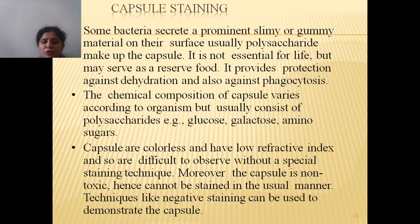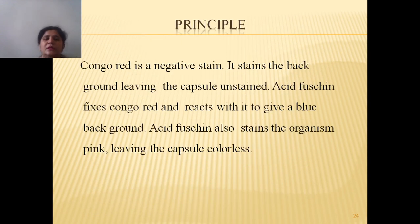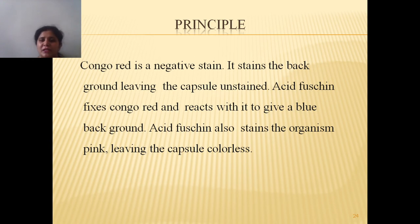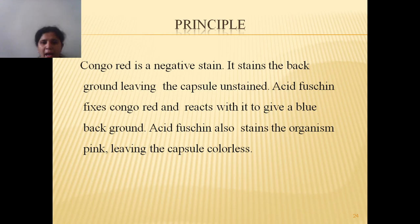In addition, capsules are non-ionic and therefore cannot be stained in the usual manner. We can also make use of negative staining to demonstrate the capsule. The principle of capsule staining: we make use of Congo Red, which is an acidic stain used in the negative staining technique — it stains the background leaving the capsule unstained. Then we use Acid Fuchsin, which fixes Congo Red and reacts with the blue background. Acid Fuchsin stains the bacteria pink, leaving the capsule colorless and the background appearing blue in color.